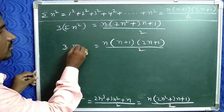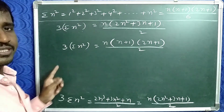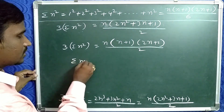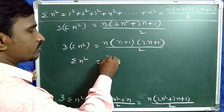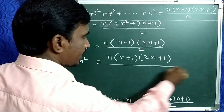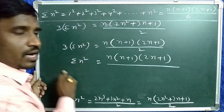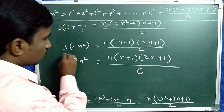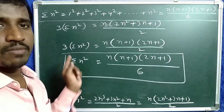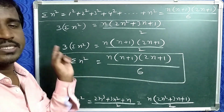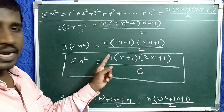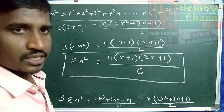So this is the formula for σn². σn² means the sum of the squares of first n natural numbers, which equals n(n+1)(2n+1)/6. That completes the proof.